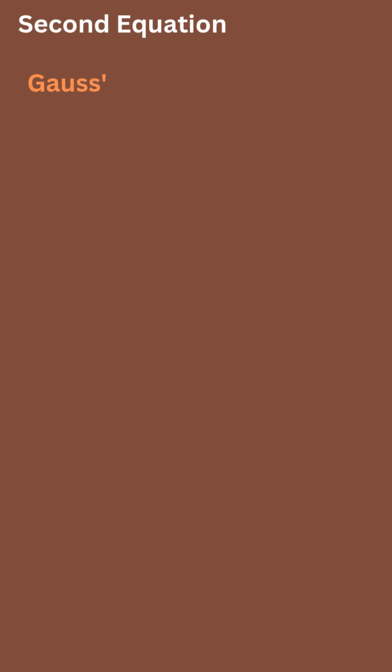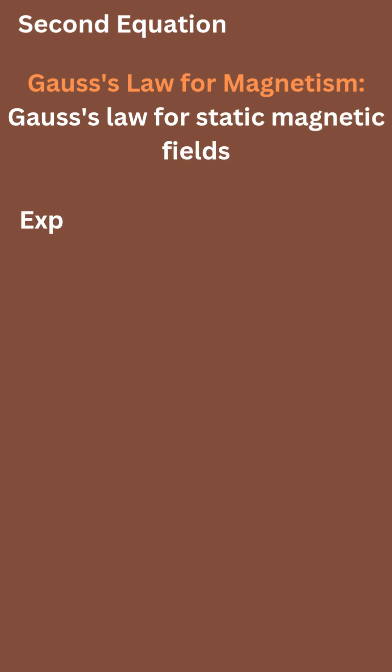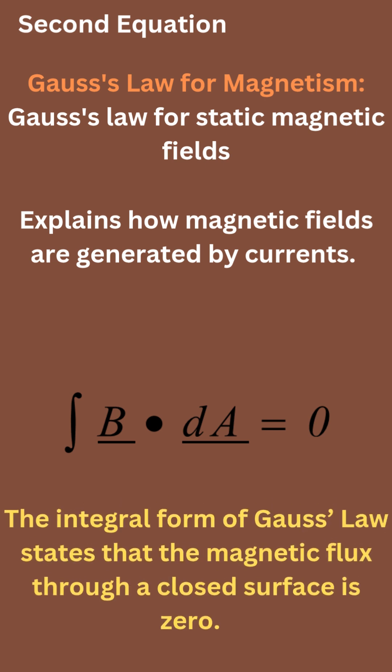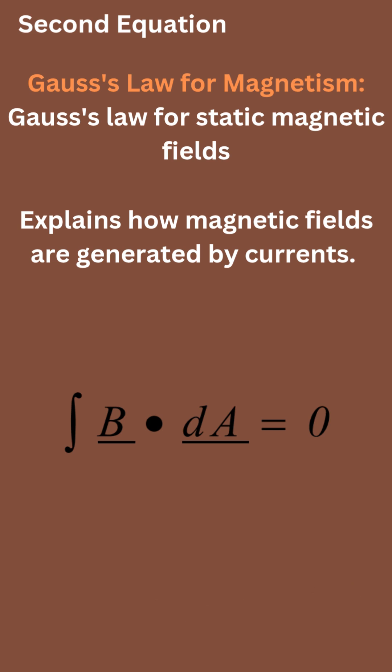Now let's see the second equation, it is Gauss's law for magnetism. This law is for static magnetic fields. It describes the absence of magnetic monopoles and how magnetic fields are generated by currents. Here is its integral form. The integral form of Gauss's law states that the magnetic flux through a closed surface is zero.